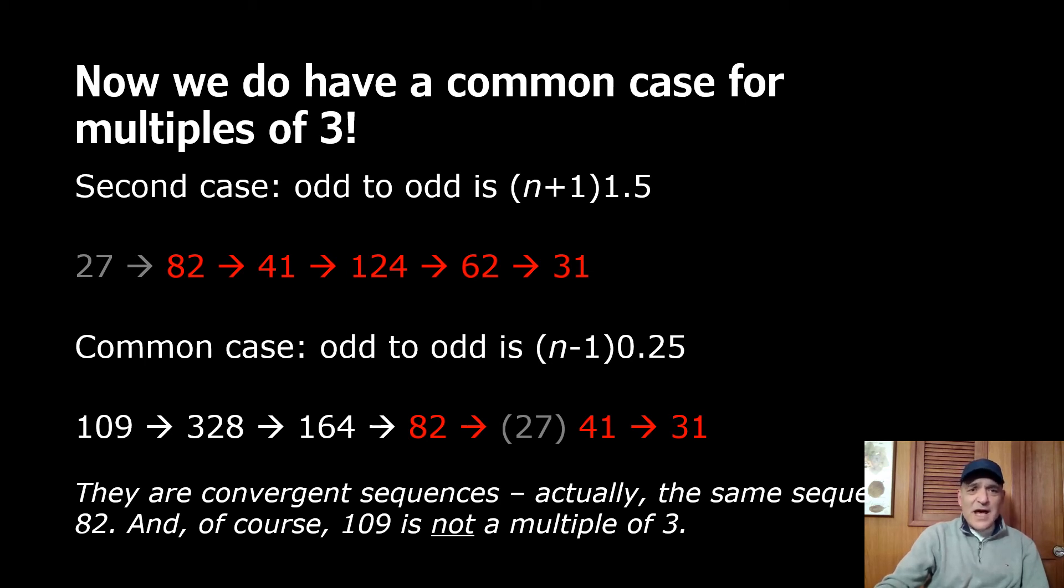Now we do have a common case for multiples of three. The second case is actually the first case, it's (n+1) times 1.5 minus 1. So 27 input, 82 output, division by 2 gives 41. The odd only way of doing it is 27 plus 1 is 28 multiplied by 1.5 minus 1 is 41. We go straight from 27 to 41 in either case. Now with the common case we see 109 and we see 41 but we do not see 27.